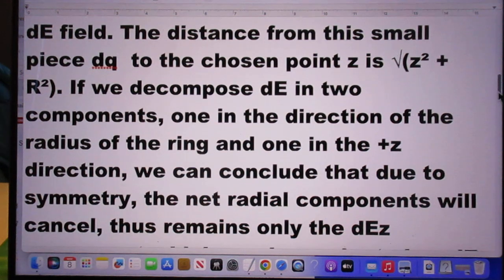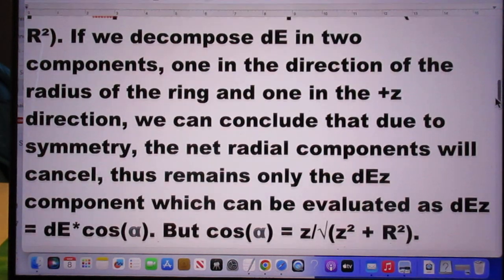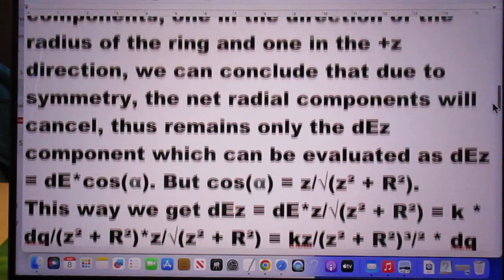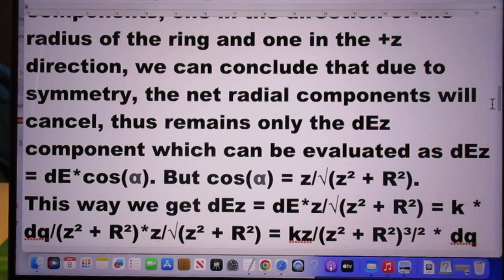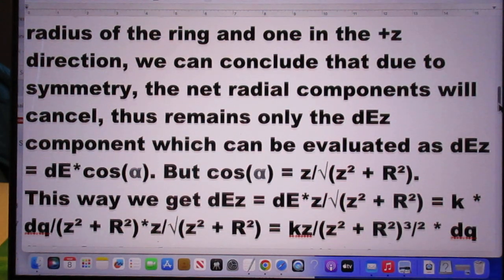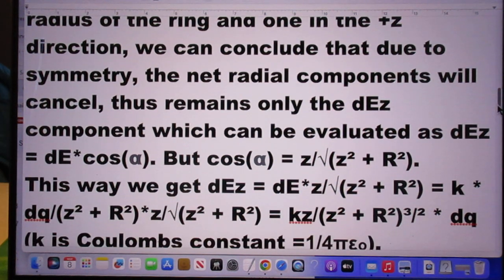If we decompose DE in two components, one in the direction of the radius of the ring and one in the plus Z direction, we can conclude that due to symmetry the net radial components will cancel. Thus only remains the force in the Z direction, in this case DEZ.